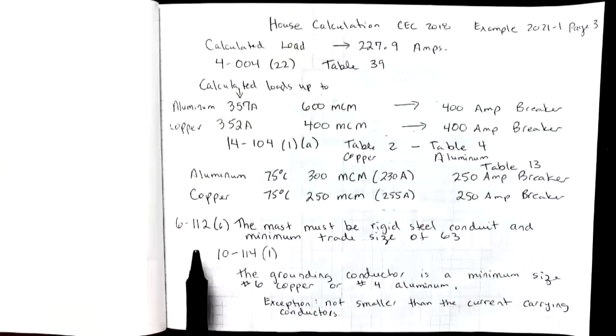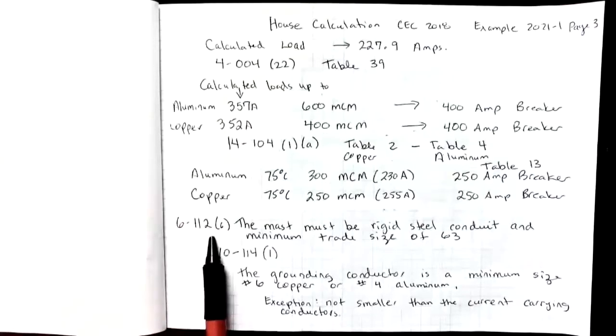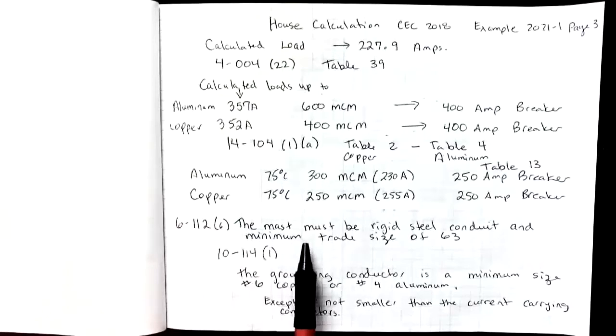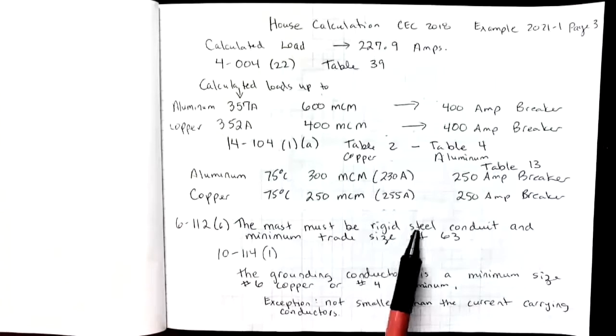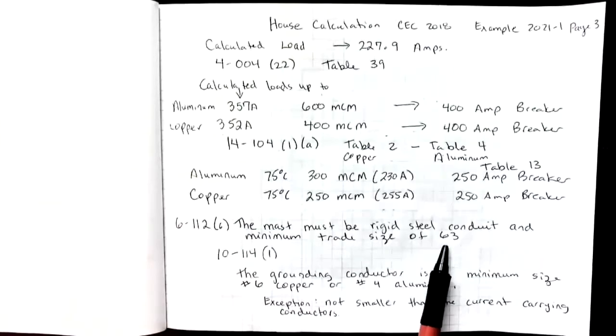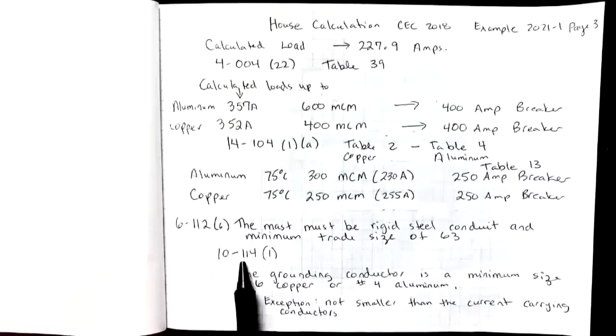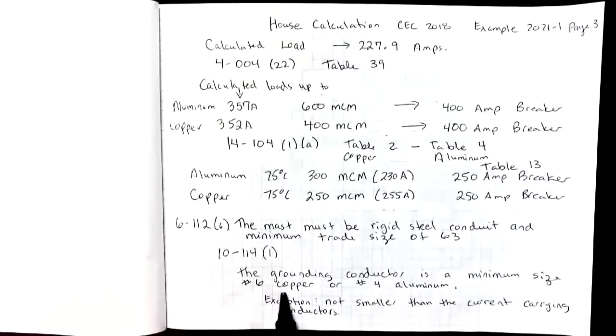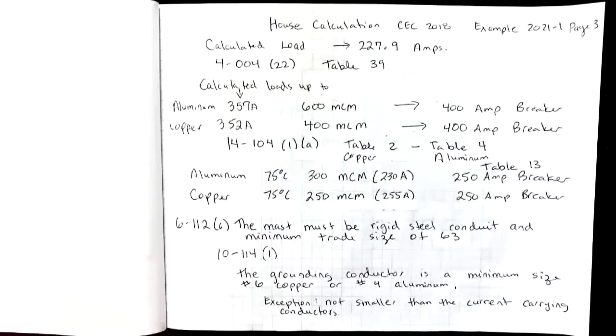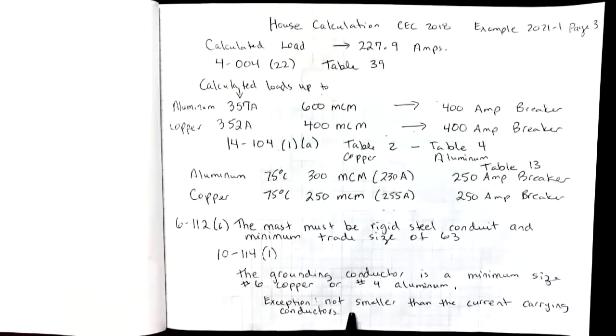Once we decide on wire size, we can then look at rule 6-112(6). It says that if we're going through the roof and we're going to use a mast, the mast must be rigid steel and minimum trade size of 63. Then rule 10-114(1) tells us that the grounding conductor needs to be a minimum size of number 6 copper or number 4 aluminum. And there is an exception. We could go smaller for that ground size as long as the ground wire is not smaller than the current carrying conductors. In this case, our current carrying conductors are much larger, so we better go with the minimum size of number 6 or number 4.